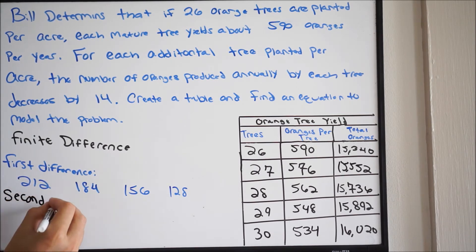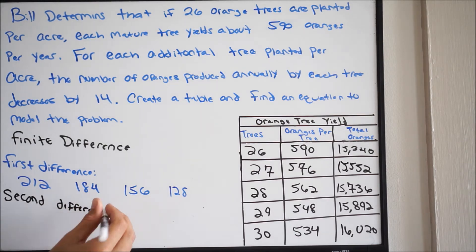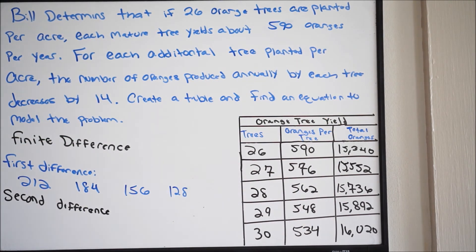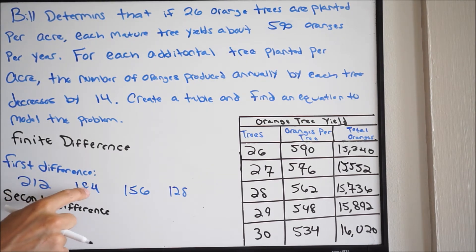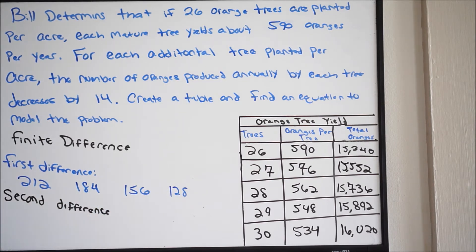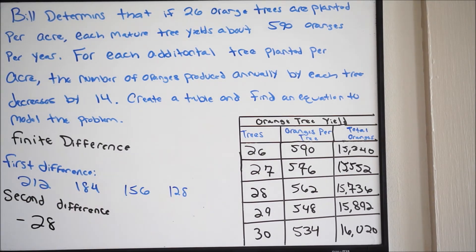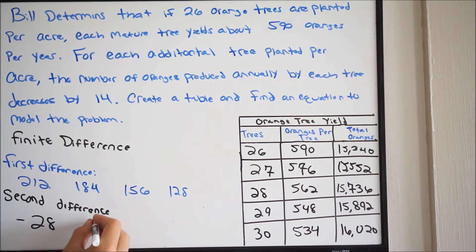Second difference — we're not going to use these y values again. We're going to use the values we obtained from the first difference and compare the change the same way. So I'm simply going to do 184 minus 212 and get negative 28. Then 156 minus 184 — negative 28. Then 128 minus 156 — negative 28.